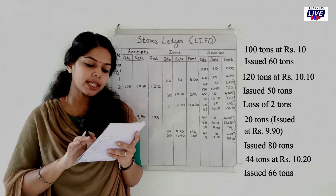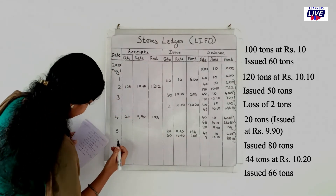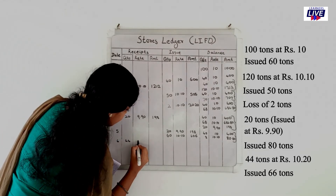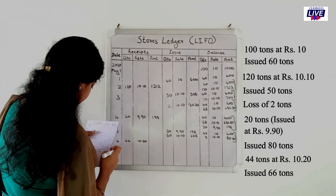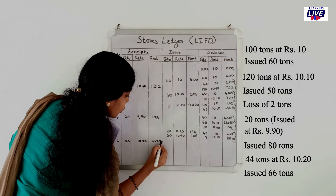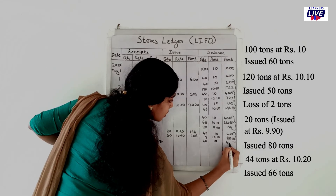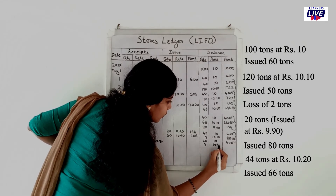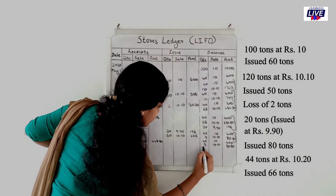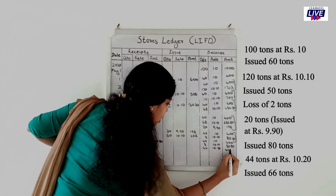Sixth entry — received 44 tons at the rate of 10 rupees 25 paise per ton, amount 451. Balance now: 40 tons at 10 rupees (400), 8 tons at 10.10 (80.80), and 44 tons at 10.25 (451), totaling amount 448.80 for the new receipt.